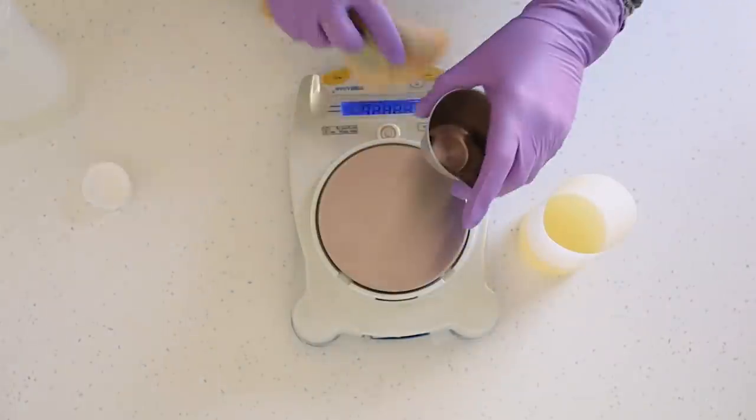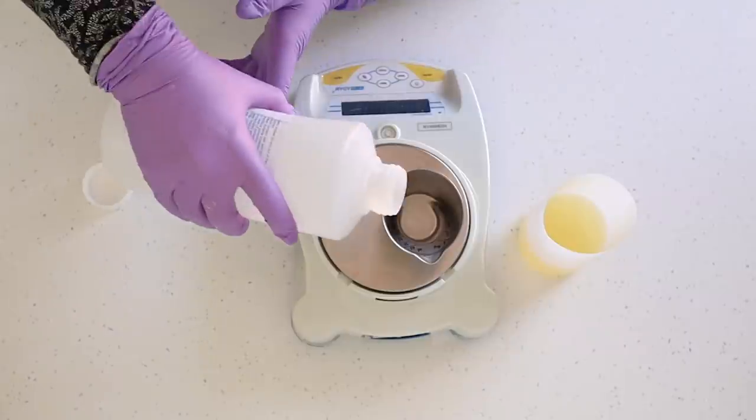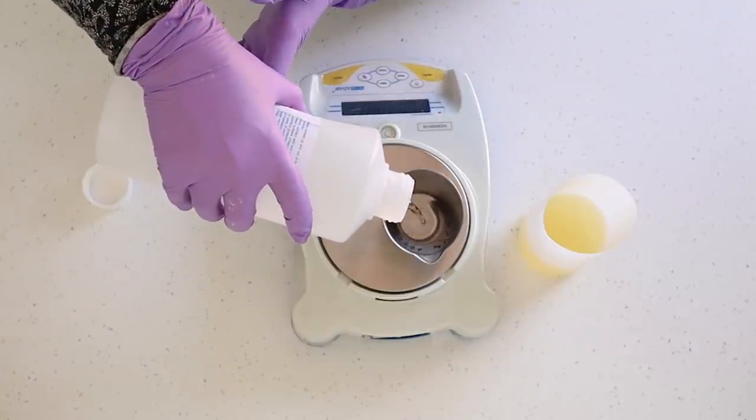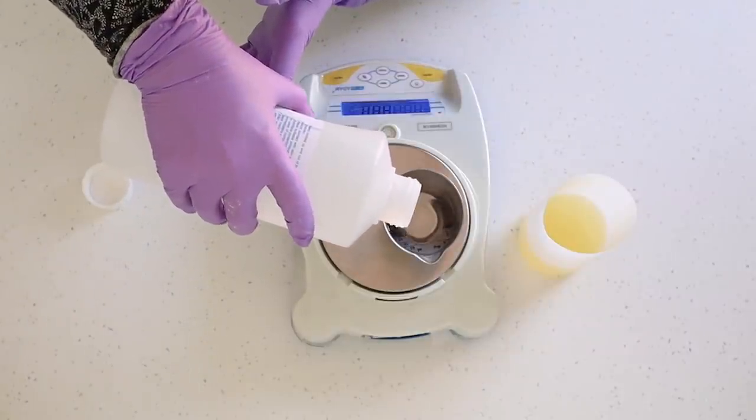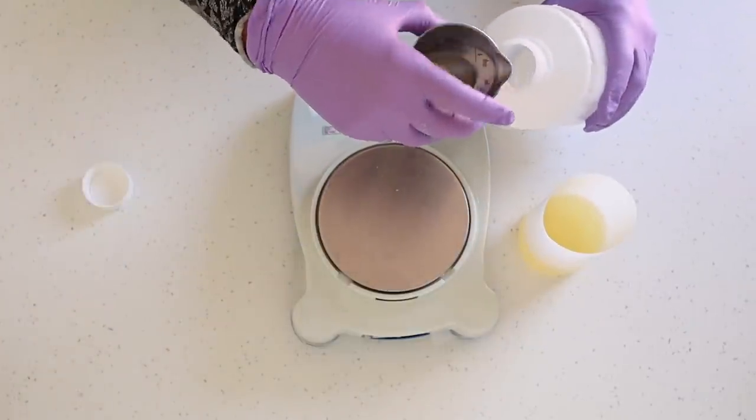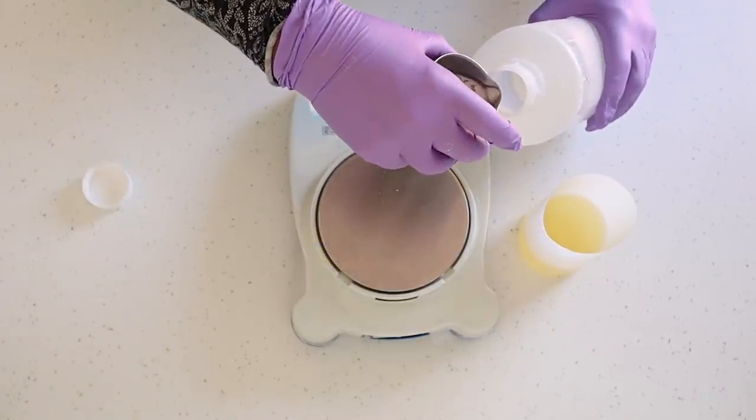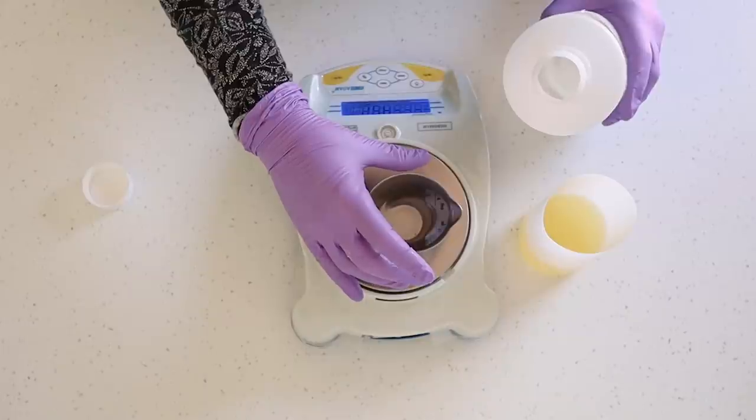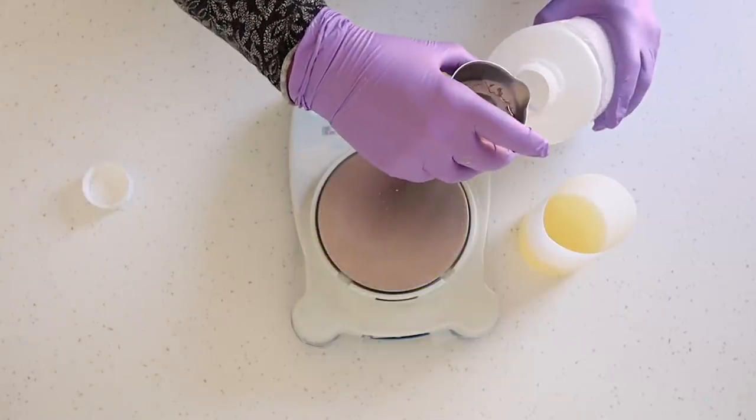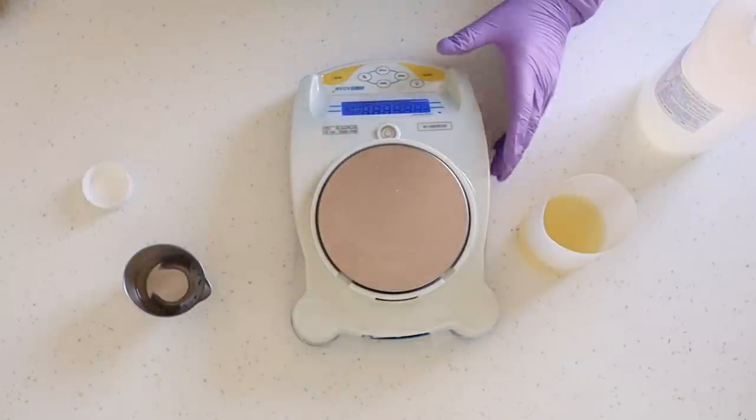Now some of you may have noticed that I've actually changed my scales. Very observant of you those who have noticed. There was no particular reason for doing that—I had the KD 7000 scales and they were absolutely great, but in the UK if we sell our soaps we actually have to have trade approved scales, not necessarily for making the soap but for selling the soap. So therefore these are just my trade approved scales that I'm using.